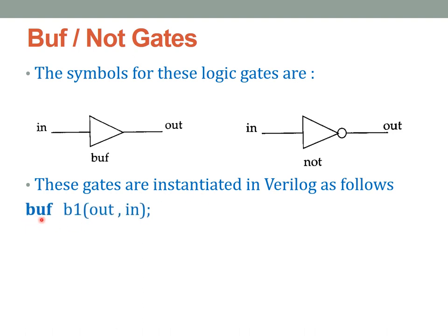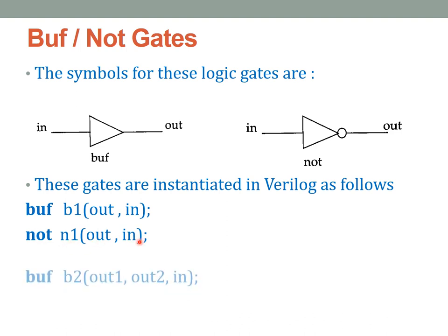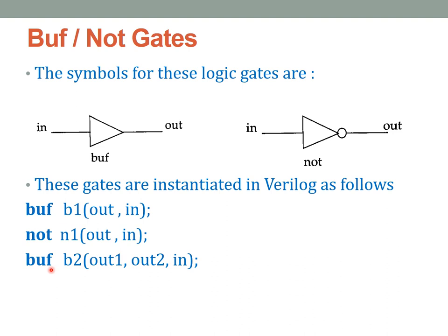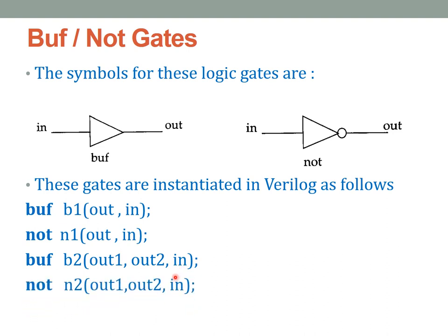We write the name of the primitive, which is 'buf', followed by an optional instance name. So 'buf P1' is the instance name, and the order is: the last variable in the list is the input, all others are the output. So we have output then input list. Similarly, 'not N1' has output then input list. In case the buffer has multiple outputs, 'buf B2' lists all outputs first, but the last variable is always the input. Similarly for the not gate.